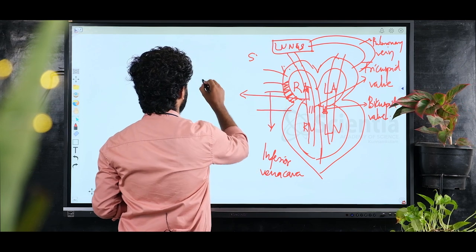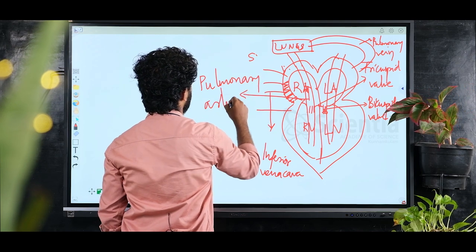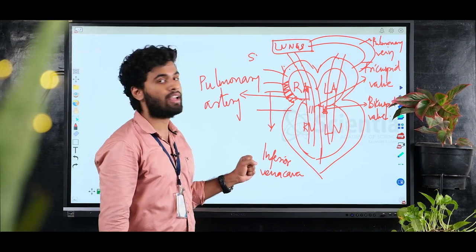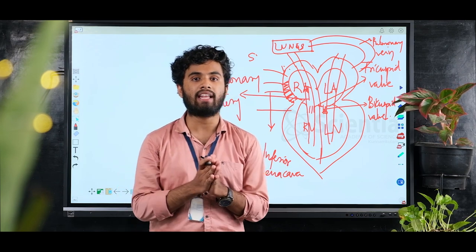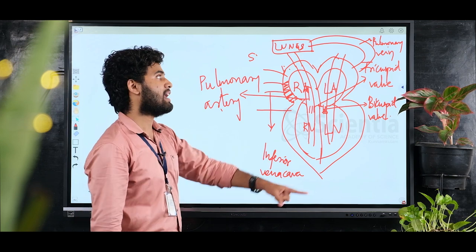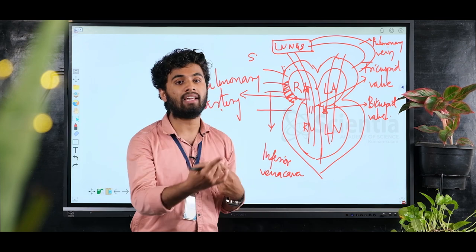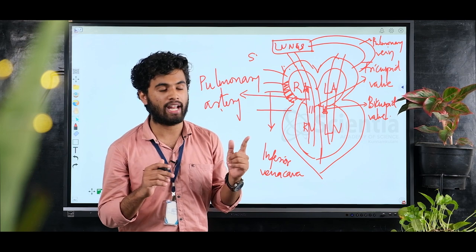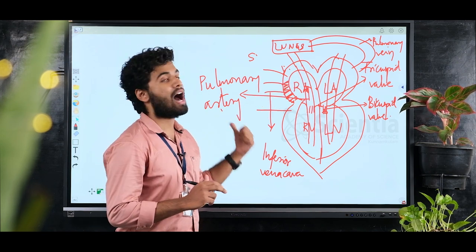From the right ventricle, blood goes through the pulmonary artery. Usually arteries carry oxygenated blood and veins carry deoxygenated blood. However, the pulmonary artery is the only artery that carries deoxygenated blood, and the pulmonary vein is the only vein that carries oxygenated blood.